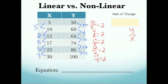A linear equation will have a consistent rate of change between any two ordered pairs. And in this case, it's 2. Our rate of change is 2.